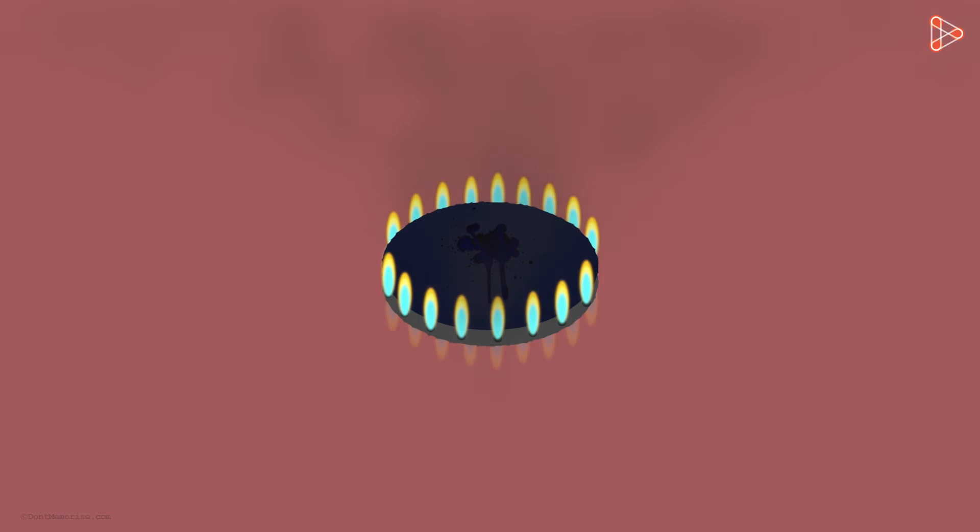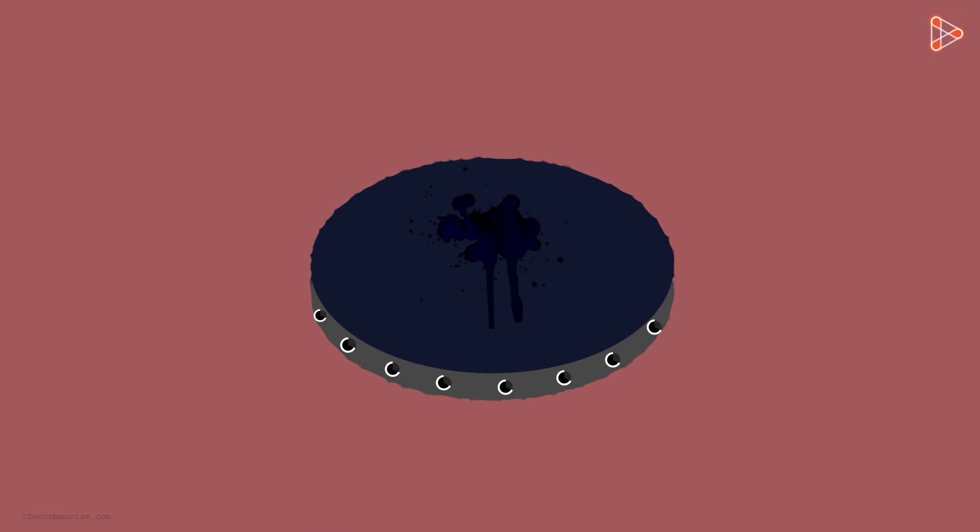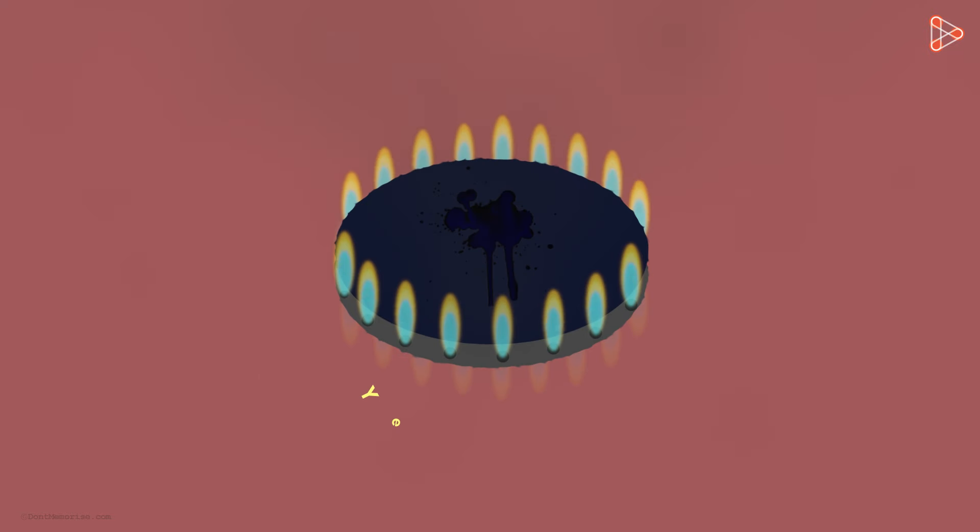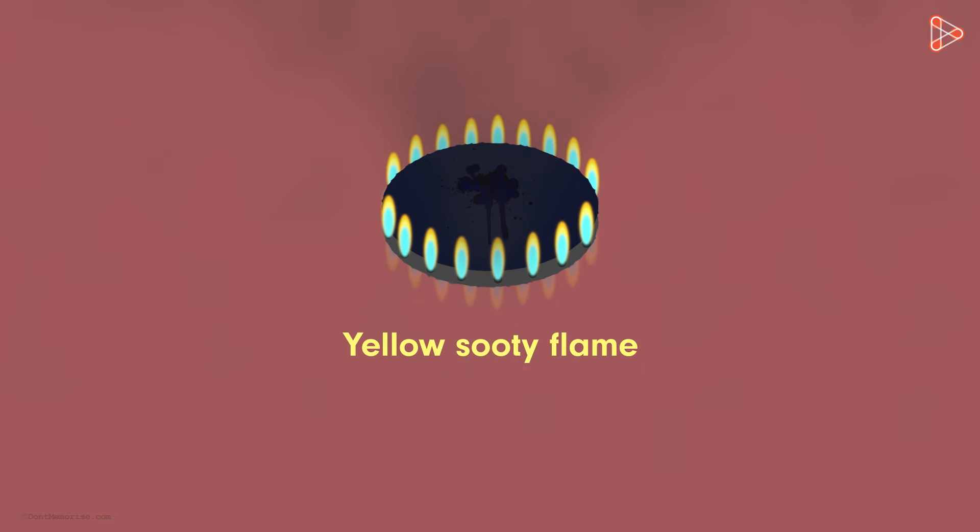Yes, the only answer for this is the complete and the incomplete combustion process. When the gas burner gets old, its air holes get clogged. As a result, all the oxygen needed to burn the fuel does not reach it. That is the reason why we start getting yellow sooty flames. It clearly indicates inefficient use of fuel.